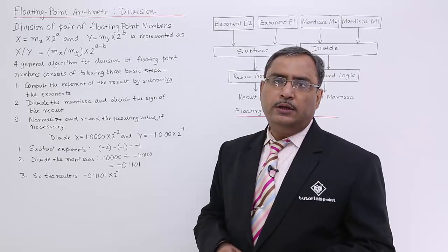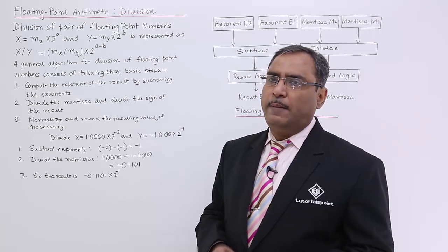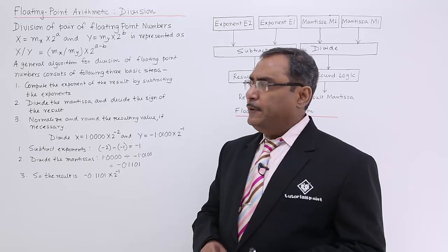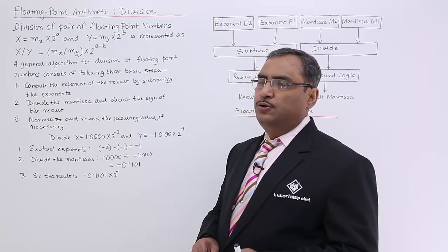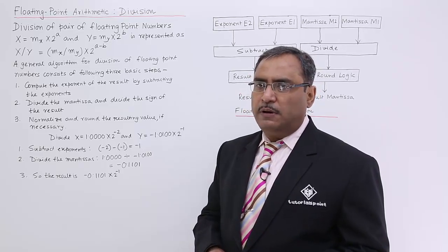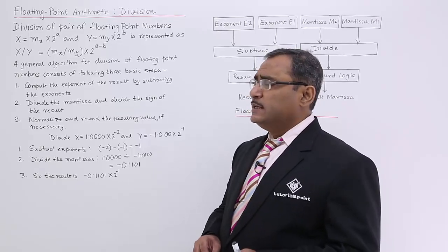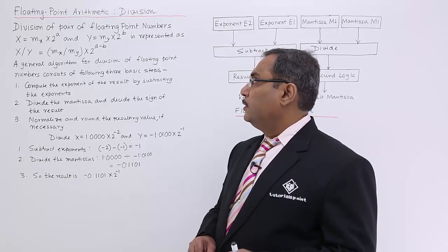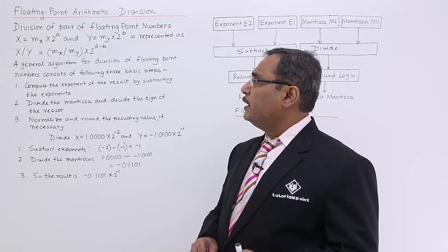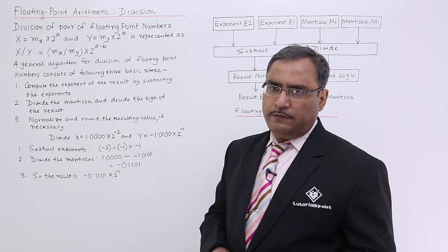Now let us suppose we are having two floating point numbers, one is capital X and one is capital Y, and capital X is equal to mx into 2 to the power of a. m stands for mantissa, can also be called as significant. Small a is nothing but the exponent, and in case of Y, my is the mantissa and b is the exponent.